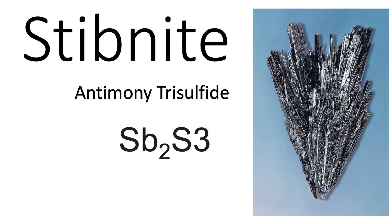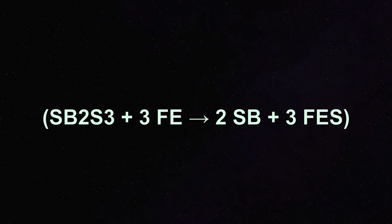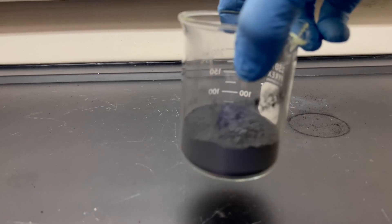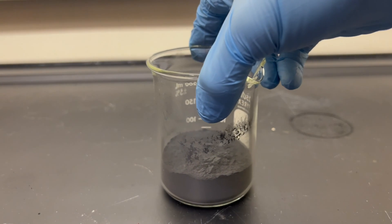Antimony can be found as a simple ore known as stibnite — antimony trisulfide. We can liberate the metal in two main ways: the classic roasting of stibnite to form antimony trioxide, then a reduction with carbon, or a one-step reduction where antimony sulfide is directly reduced with iron to form the metal. For this video, I will cover direct reduction.